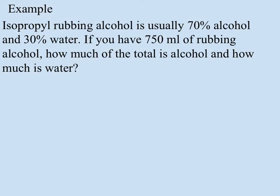So look at the second example here. This one I've switched it up a little bit and now we know what our percent composition is and we want to change it back to volume or mass of the solute in this case. So it says isopropyl rubbing alcohol is usually 70 percent alcohol and 30 percent water. If you have 750 milliliters of rubbing alcohol how much of the total is alcohol and how much is water?